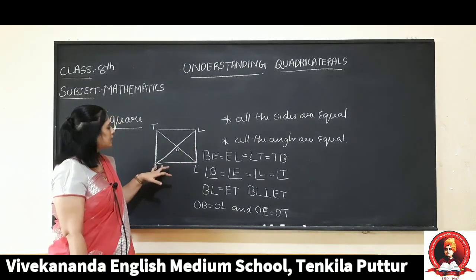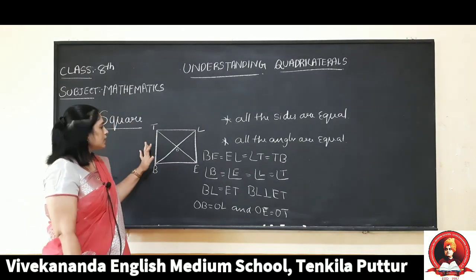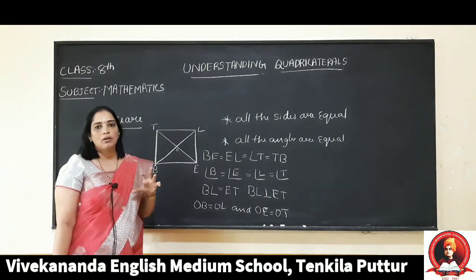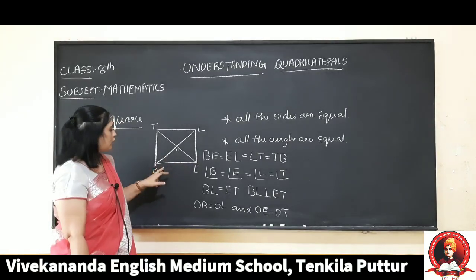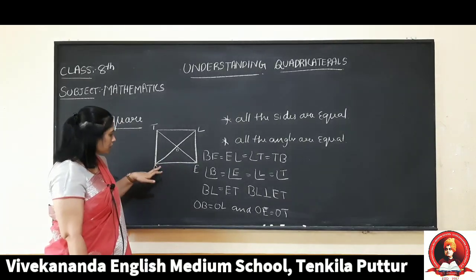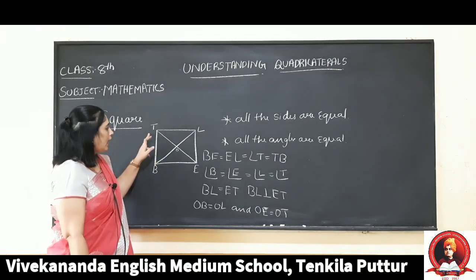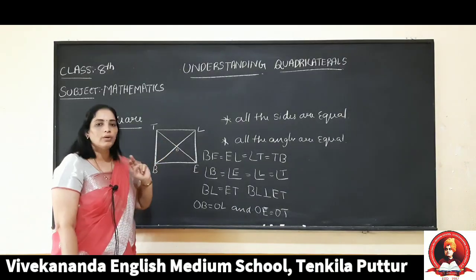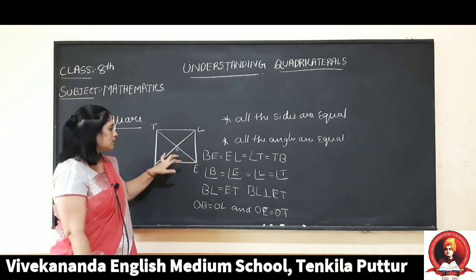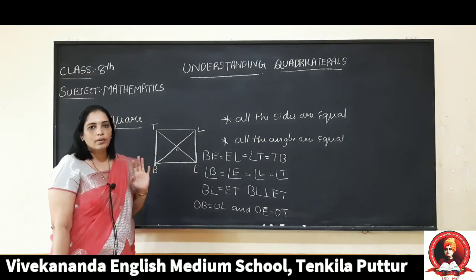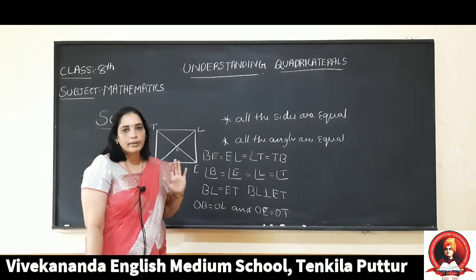These conditions can easily be proved using congruence of triangles. For example, considering triangle BOE and triangle BOT, and using the side-side-side condition, all three sides are equal: BE equals BT, OE equals OT, and BO is common. So all three sides are equal and these two triangles are congruent. Using this, you can prove all these properties.